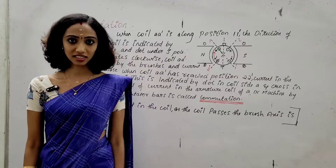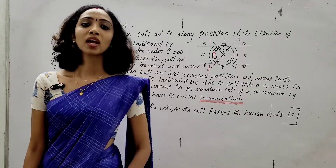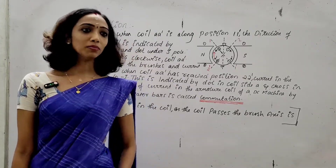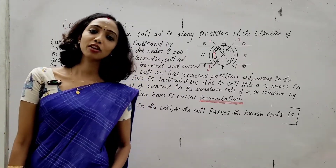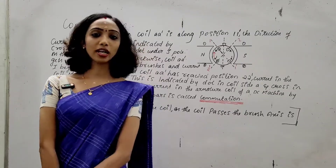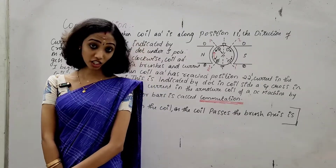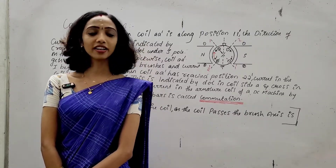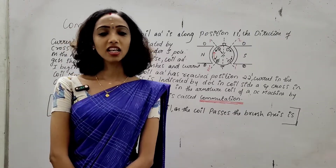The simple definition is: reversal of current in the coil as the coil approaches the brush is called commutation.